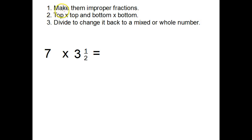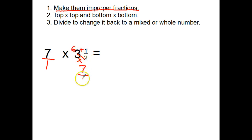Step one: make them improper fractions. To make 7 an improper fraction, all I have to do is put a one under it, so it's seven over one. For three and a half, I multiply: three times two is six, and six plus one is seven. So three and a half is the same as seven halves. Now I have seven over one times seven over two.